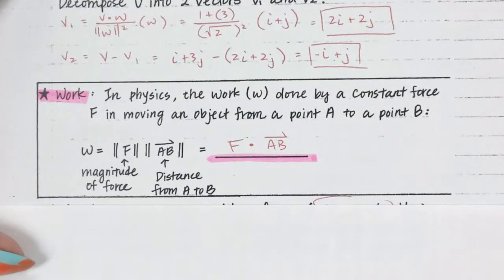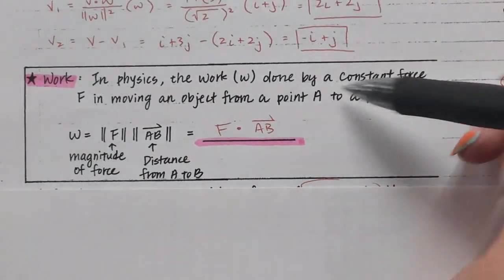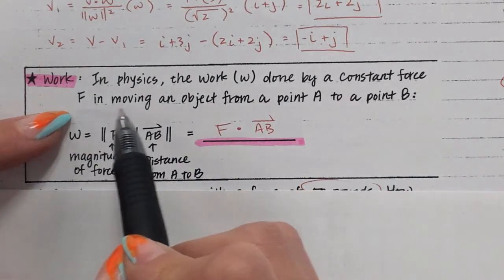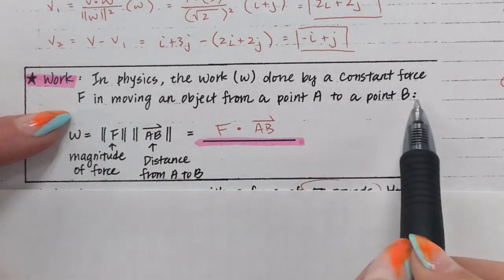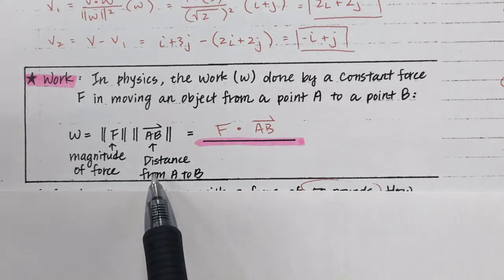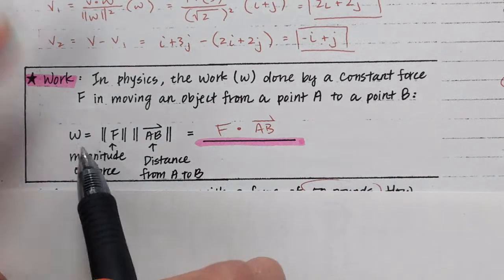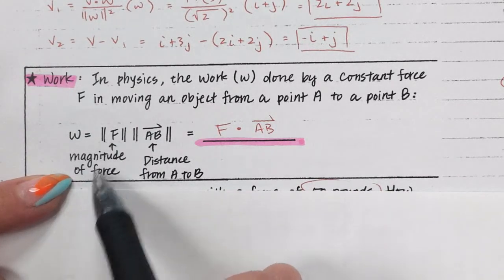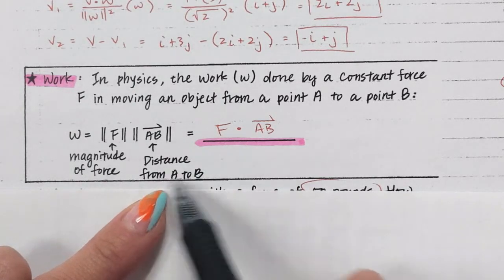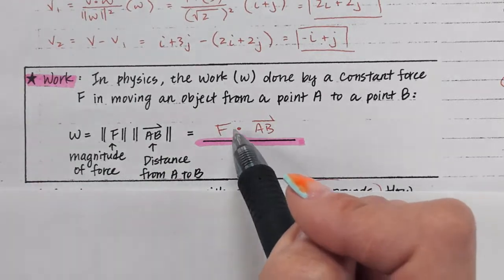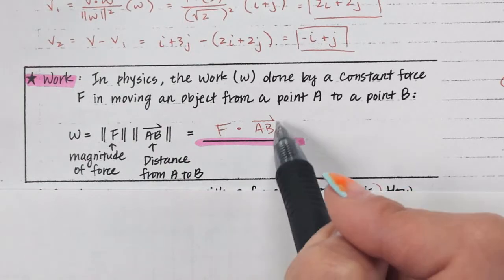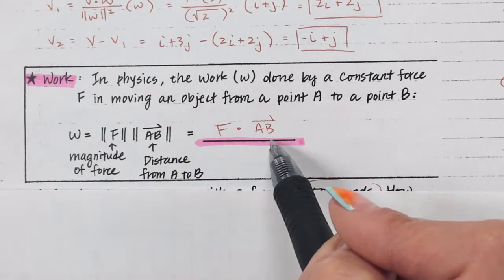Now there's something called work in physics. The work done by a constant force F in moving an object from point A to point B uses this formula: work equals the magnitude of the force times a distance. What this really is, is a force vector times a distance vector — so this is a dot product, a vector times a vector.